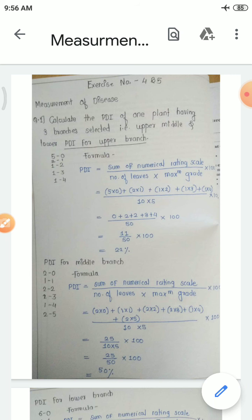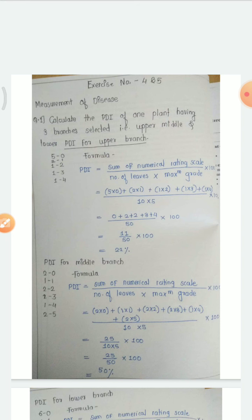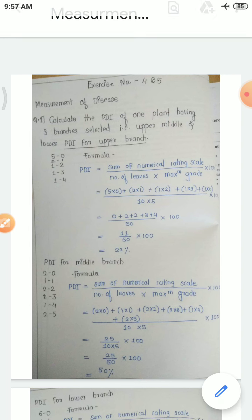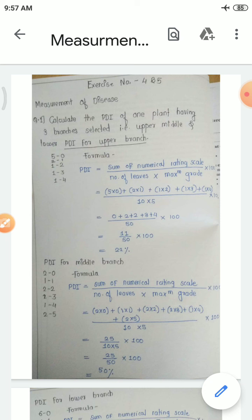For certain diseases — such as cereal smut, neck blast, brown rot of stone fruit, and vascular wilt — once incidence occurs, there is a chance of total loss. For calculation of the actual loss, one term is used: disease severity. With the help of disease severity or disease incidence, we calculate how much damage has occurred. For that, different grade systems were developed by scientists — for example, a 12-grade system.